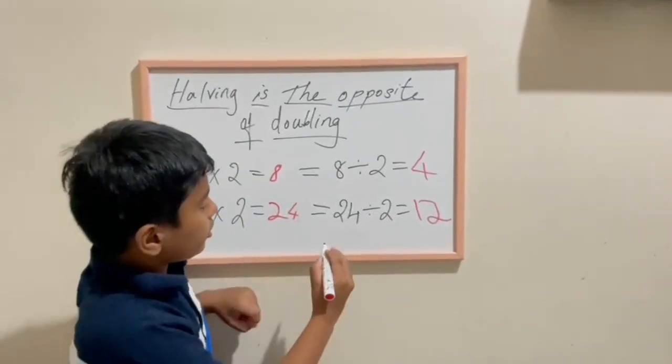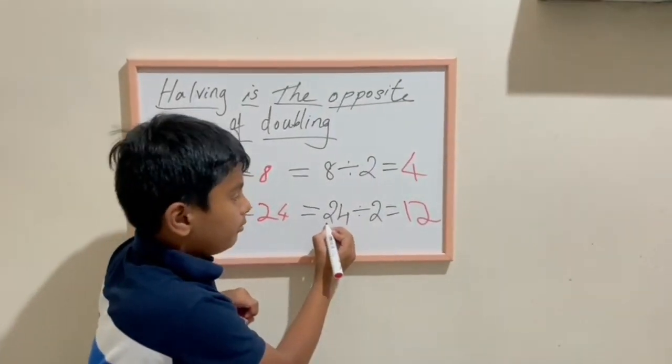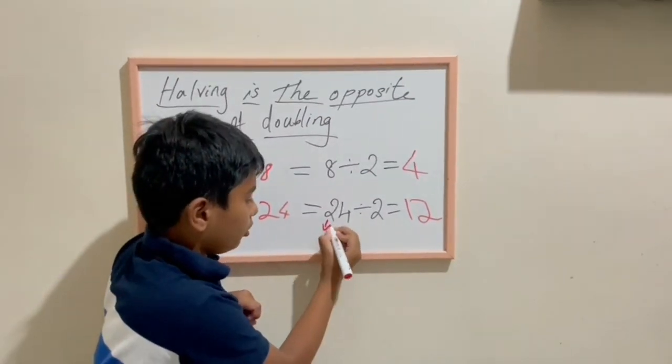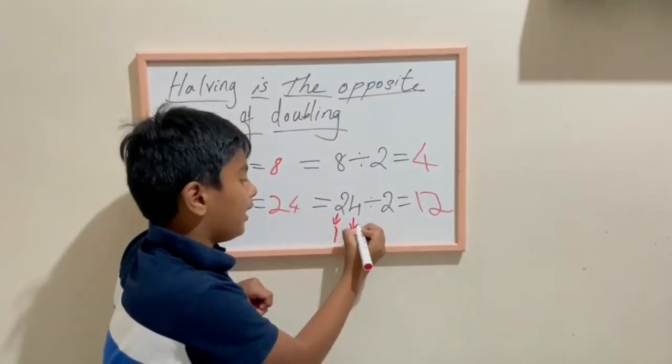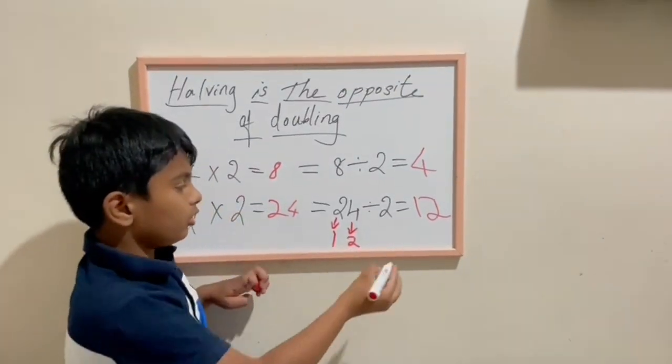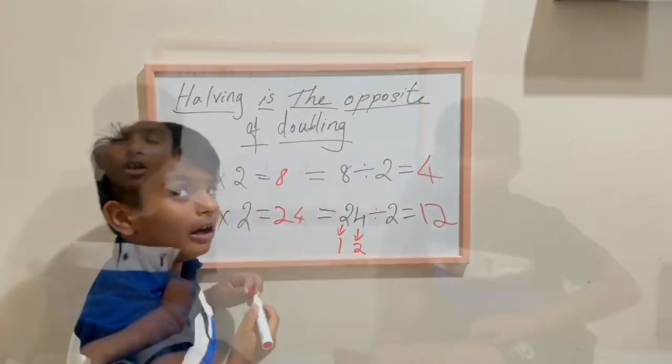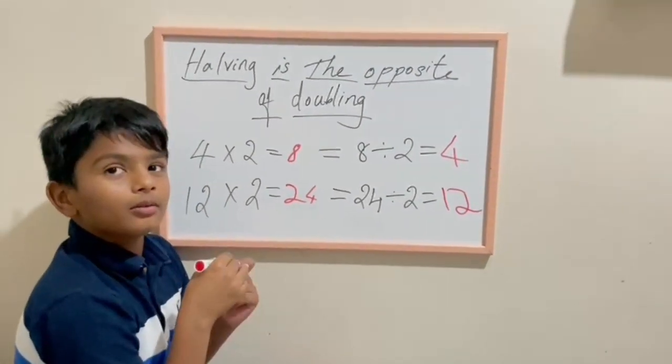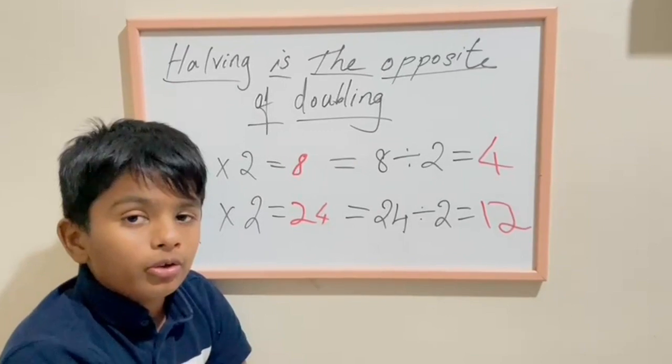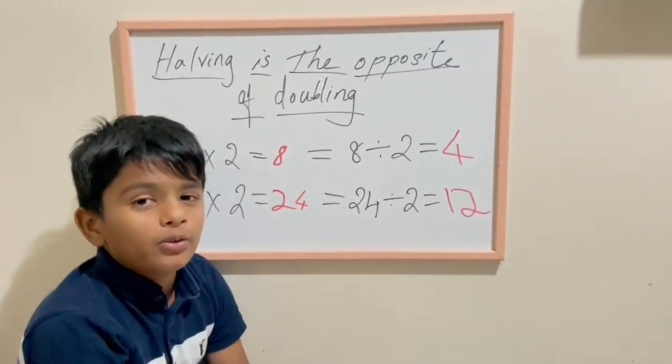Halving trick is 2 divided by 2 equals 1. 4 divided by 2 equals 2. So same answer. So doubling and halving are opposite. 8 divided by 2, 8 halving, both are same.